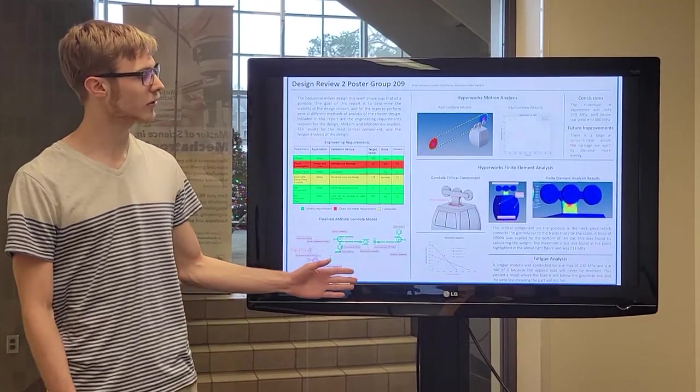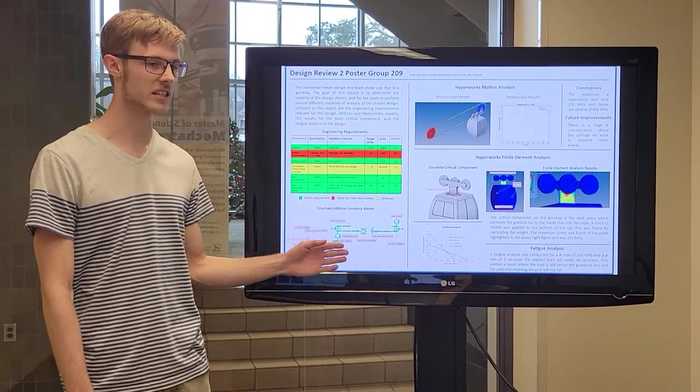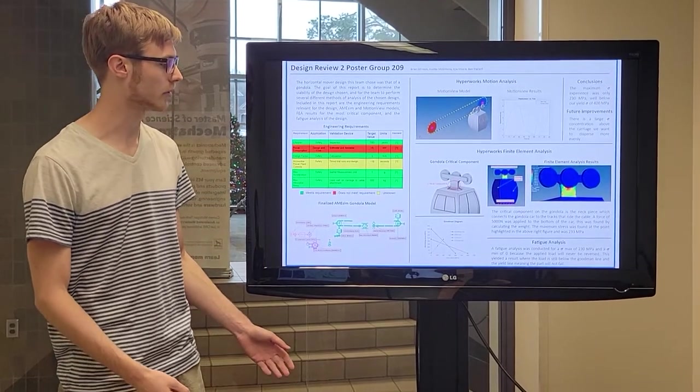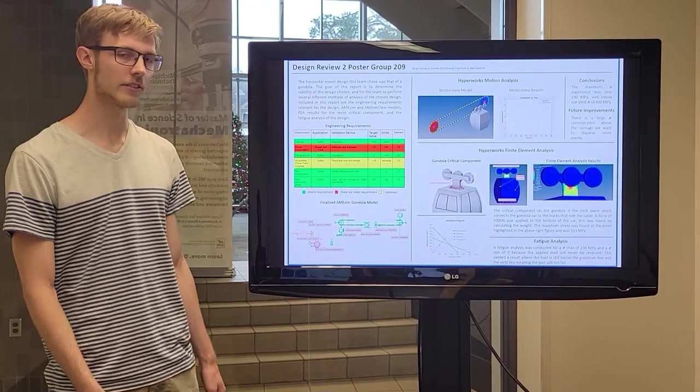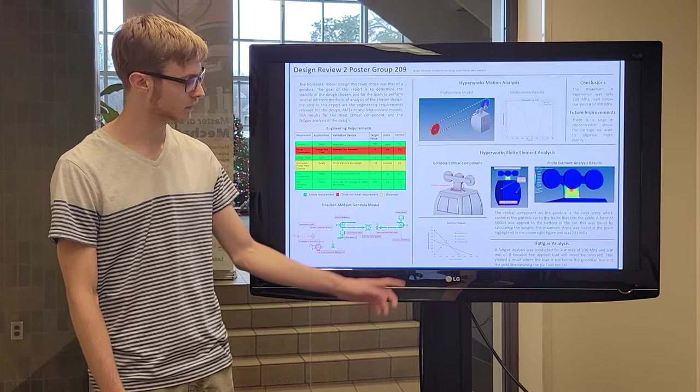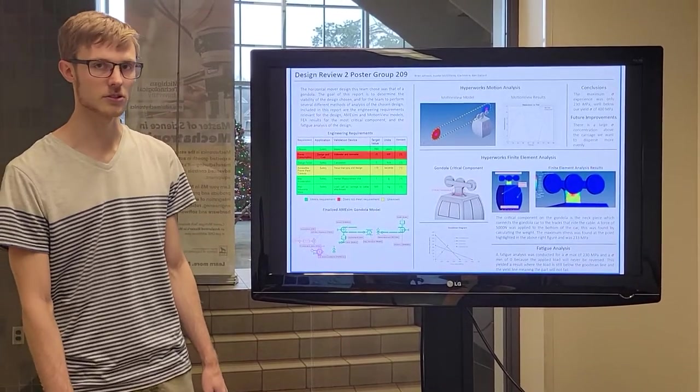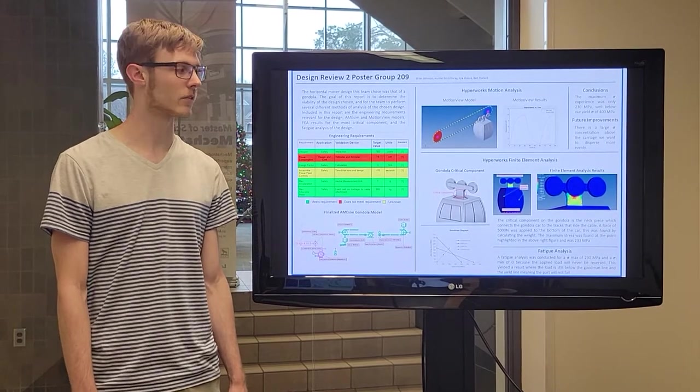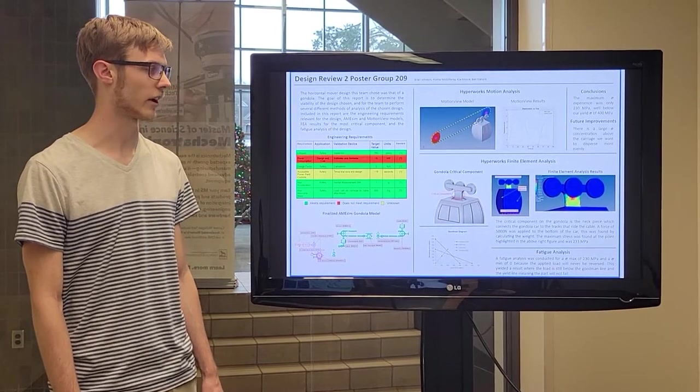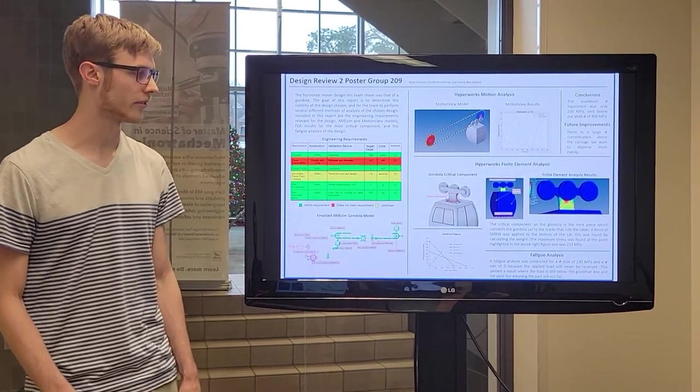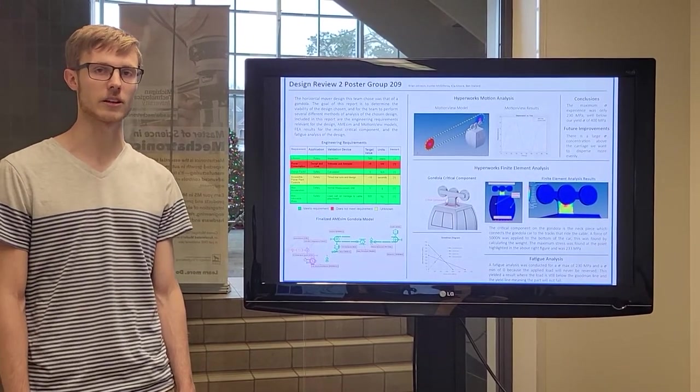The final method of analysis our team conducted was a fatigue analysis. This was composed of creating an SN curve and a Goodman diagram, which can be seen here. The parameters used to create the Goodman diagram were the maximum stress that was seen in the HyperWorks finite element analysis, that being 230 megapascals, and a load factor and gradient of one.